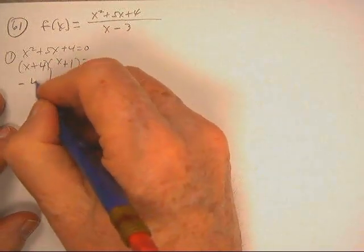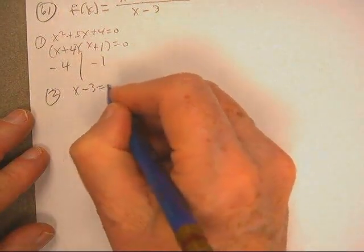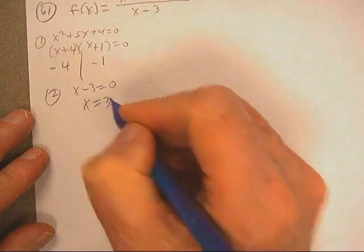There we go. How about negative four and negative one? Two, the denominator is zero, and x is three.